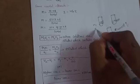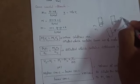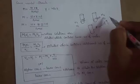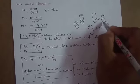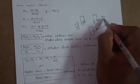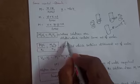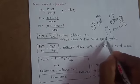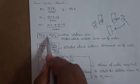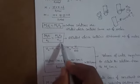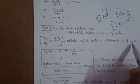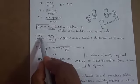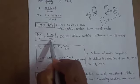For example, if HCl has molarity M1 and volume V1, and NaOH has molarity M2 and volume V2, knowing M1, V1, and V2 allows us to find M2. When solutions contain the same number of moles, use M1V1 = M2V2. When solutions contain different numbers of moles, use M1V1/n1 = M2V2/n2.